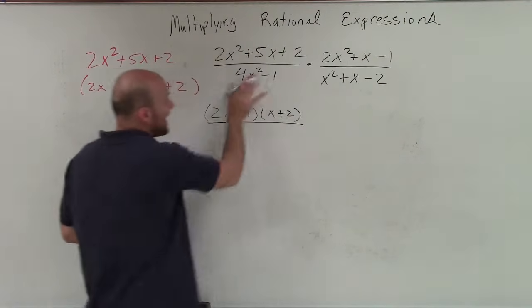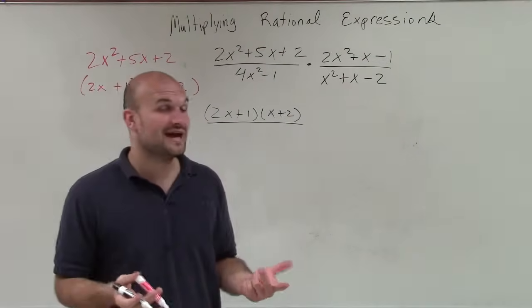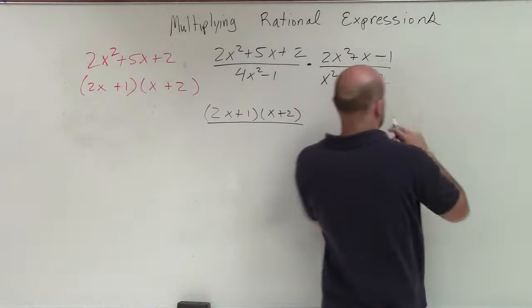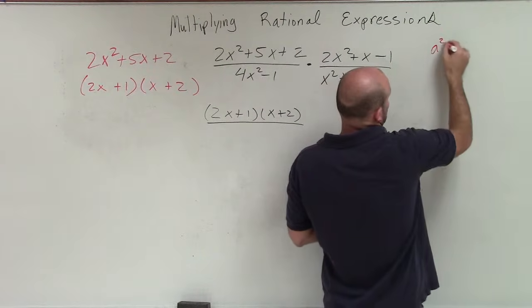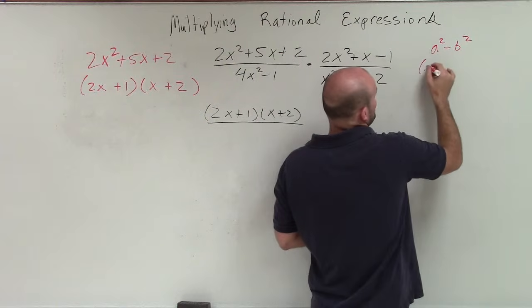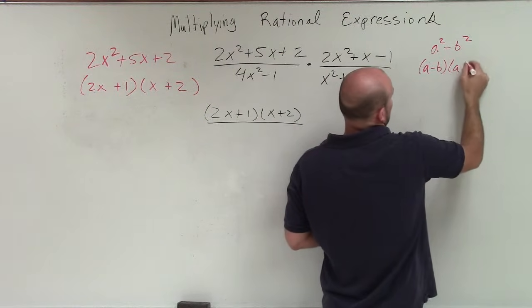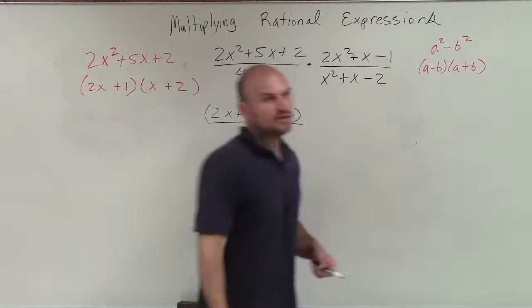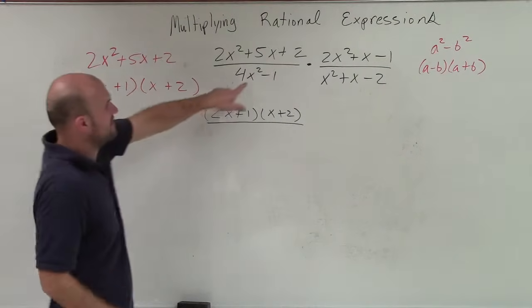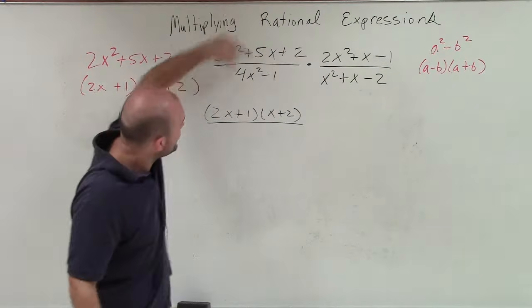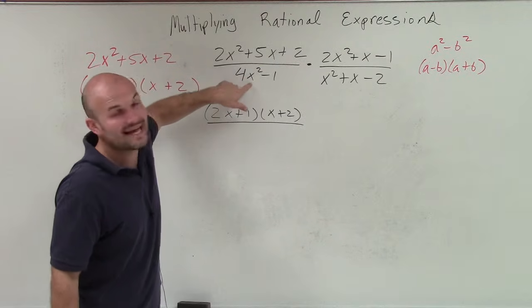Then over here, I have a difference of two squares. Believe it or not, remember difference of two squares. All difference of two squares states is if I have a squared minus b squared, that can be written as a minus b times a plus b. But you might say, well, this one has a 4x squared though. Well, is 4 a square number? Yes. Is x a square number? Yes.